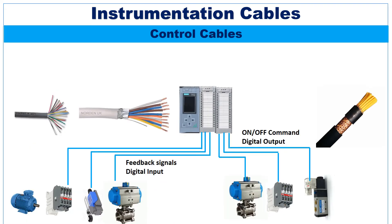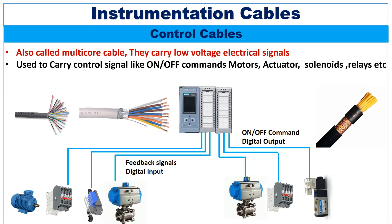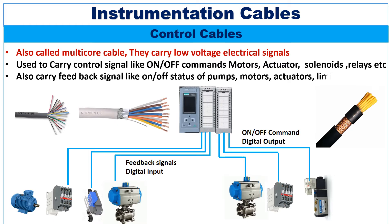Control cables are also called multi-core cables. These cables carry low-voltage electrical signals. The control cables are used to carry low-voltage control signals like on-off commands of motors, actuators, solenoids, relays, etc. These cables also carry feedback signals like on-off status of pumps, motors, actuators, limit switches, etc. Twisted cores are not required in control cables, and regular control cables do not have any shielding, though they can have shielding in some cases.